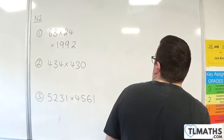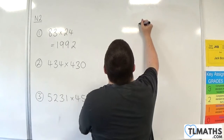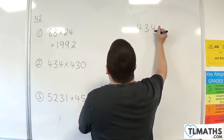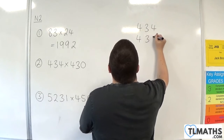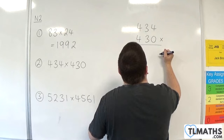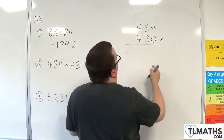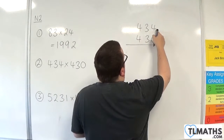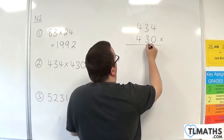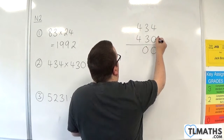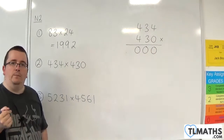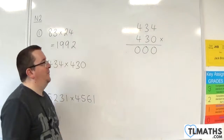So we have 434 times 430. First of all, we've got 0 times 4, which is 0; 0 times 3 is 0; and 0 times 4 is 0. So that one was an easy one to start off with.